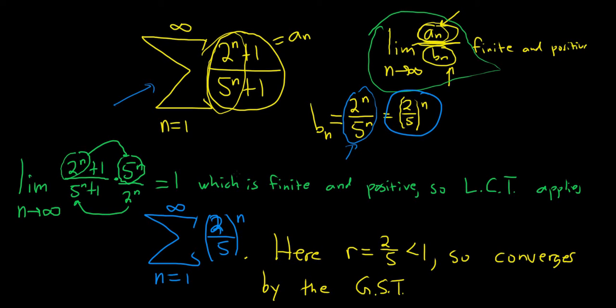And it's just more writing. You have to take this limit. You have to say it's finite and positive. So LCT applies. Then you have to explain what happens to this sum. If this converges, then our original series converges. If it diverges, then our original series diverges. I hope this video has been helpful.